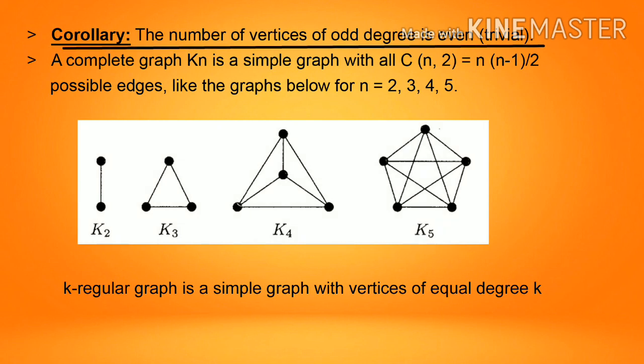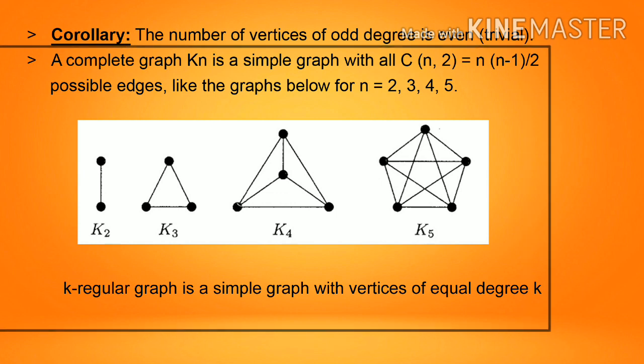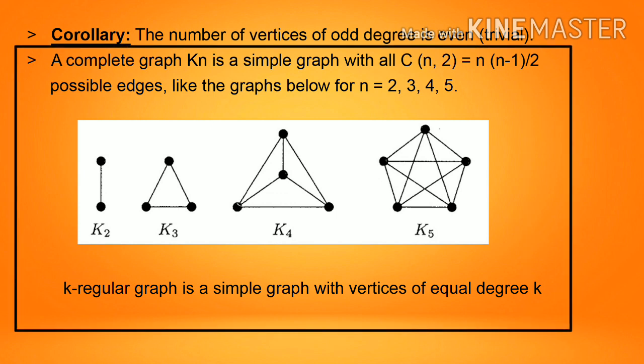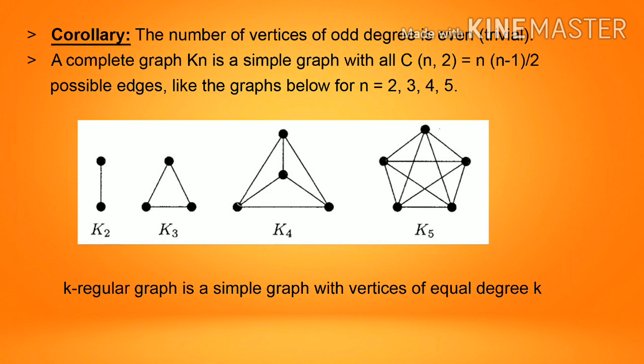Corollary: the number of vertices of odd degree is even, which is a trivial case. A complete graph Kn is a simple graph with all C(n,2) equal to n(n−1)/2 possible edges, as shown below for n equal to 2, 3, 4, 5: K2, K3, K4, K5. A K-regular graph is a simple graph with all vertices of equal degree K.